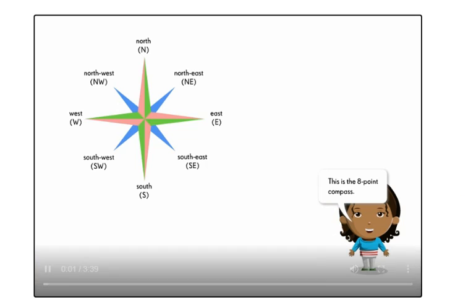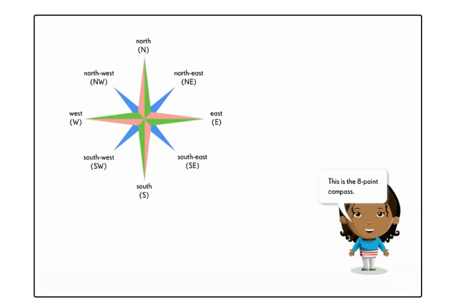This is the eight-point compass. The eight-point compass shows direction. Let's look at the directions on the compass.